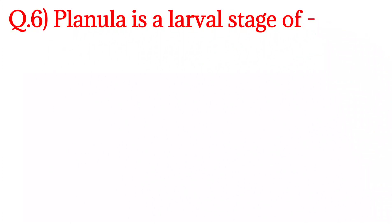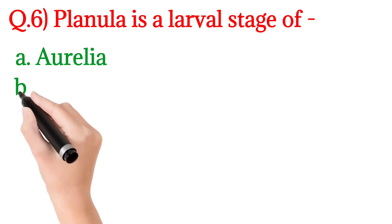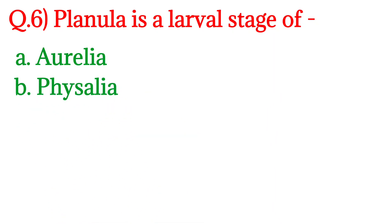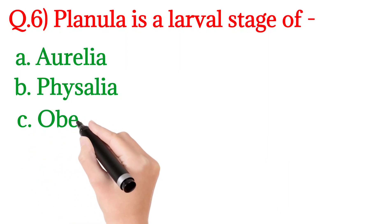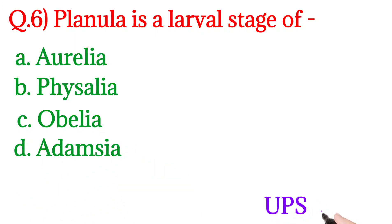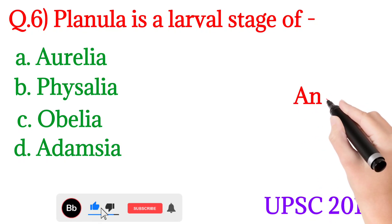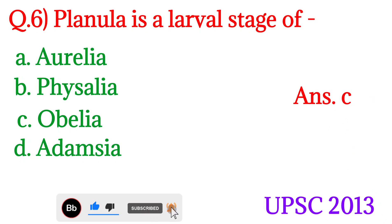Next question number 6: Planula is a larval stage of — Planula किसका larval stage होता है। Option A is Aurelia, Option B is Physalia, Option C is Obelia, and Option D is Adamsia. यह question UPSC 2013 में पूछा गया था। इसका answer होगा Option number C — Obelia. Obelia में Planula larva पाया जाता है।